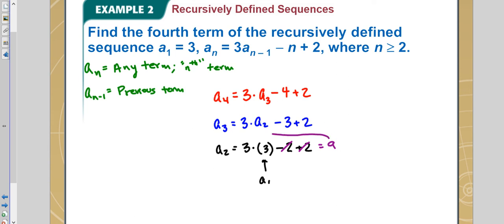Now that we know we have 9, we take that and we plug that in there. And so we would have 3 times 9, which is 27, minus 3, which gives us 26, plus 2 more equals 28. Now that we have 28, we plug that in there.